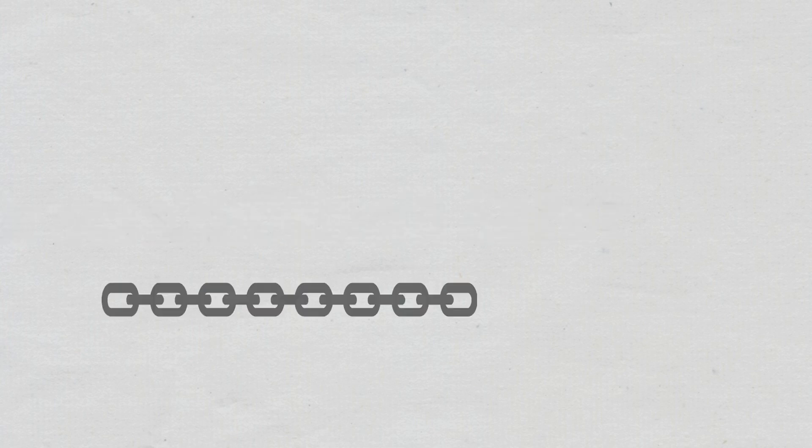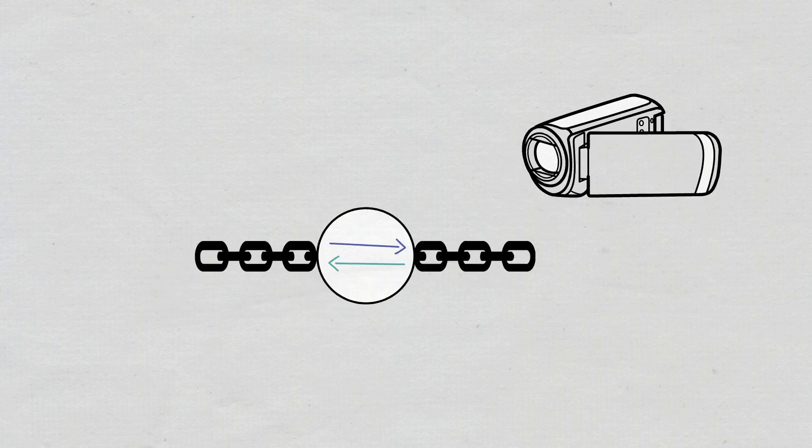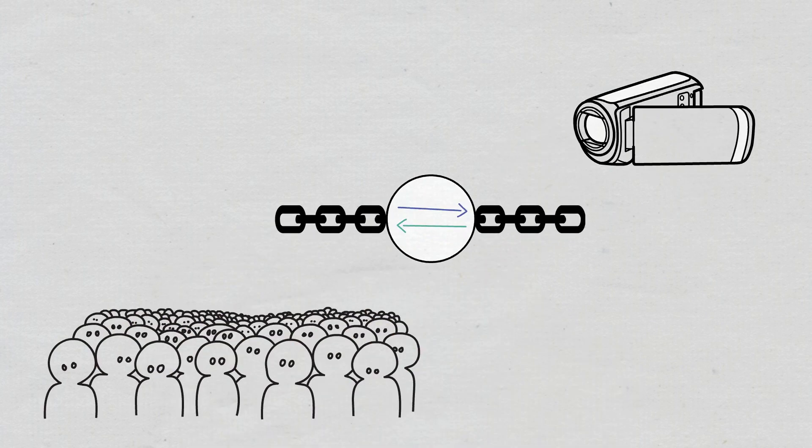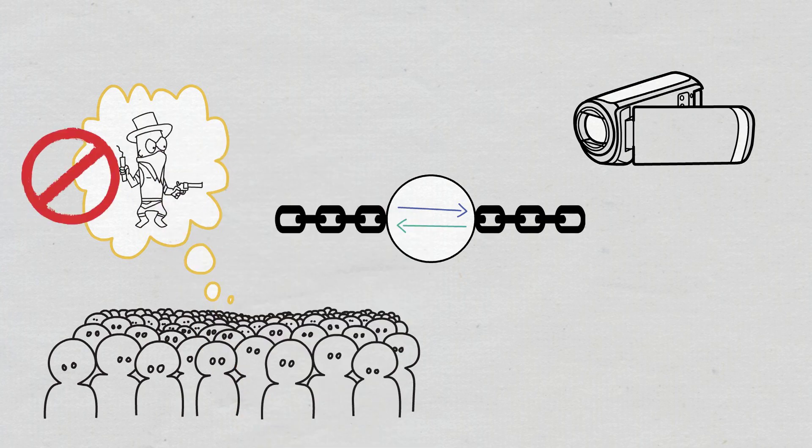Every Bitcoin transaction is recorded on the blockchain, which is public, meaning that it is really hard to copy Bitcoins, create fake ones, or steal them.